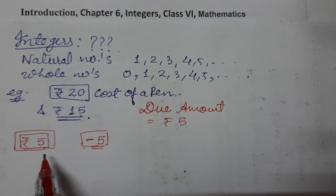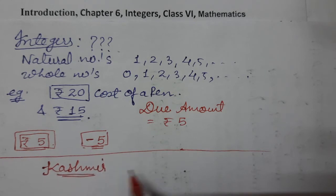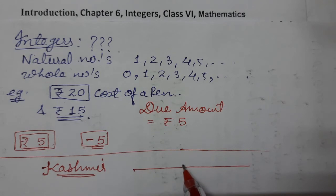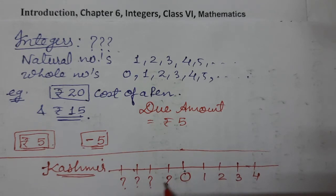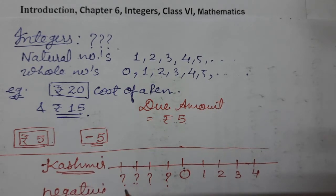Now, have you ever been to Kashmir or any other cold place? There is temperature below zero degree. In places like Kashmir, Shimla, Kulu, Manali — in winters the temperature falls below zero degree. We know zero, one, two, three, four, but what happens in extreme cold places? That temperature is negative. If positive one is on one side, its opposite is minus one, which is negative. So we need negative numbers too.